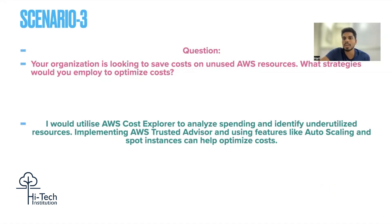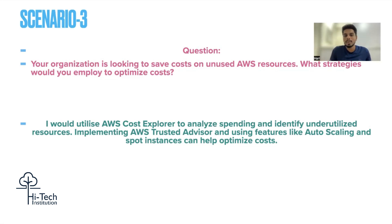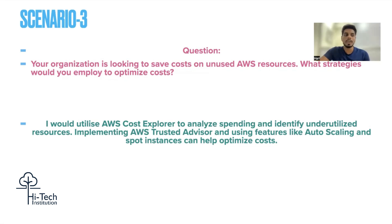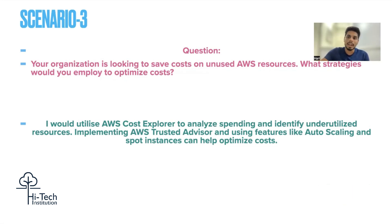Instead of always using on-demand instances, you can use spot instances to save money. Trusted Advisor will also suggest if you are using higher instance types than needed for RDS or EC2 services, and recommend downgrading your servers to reduce costs.